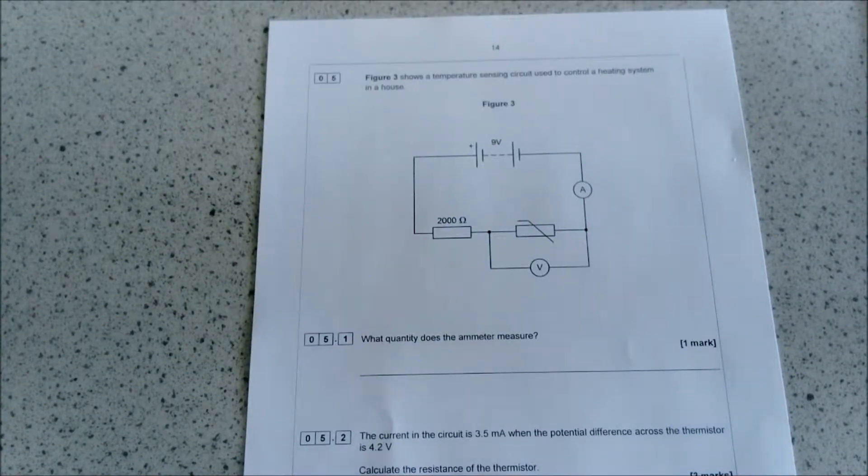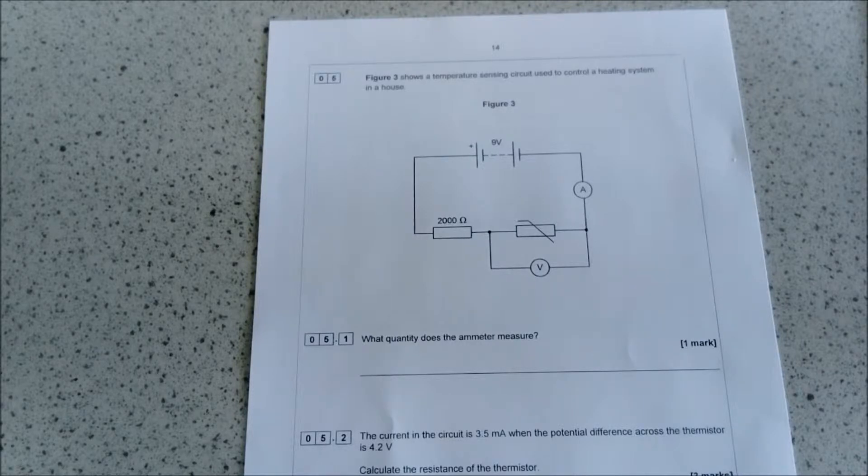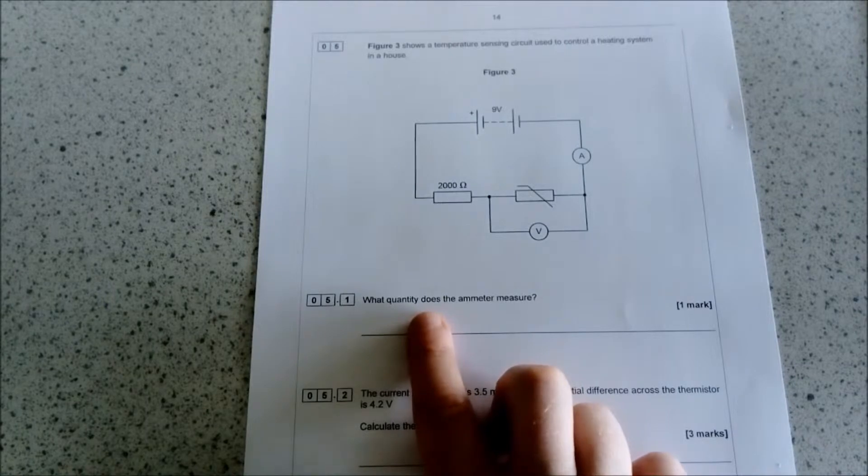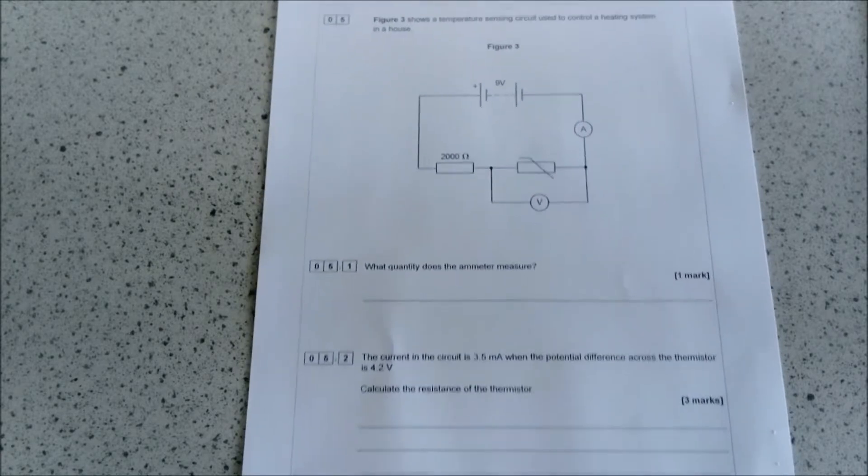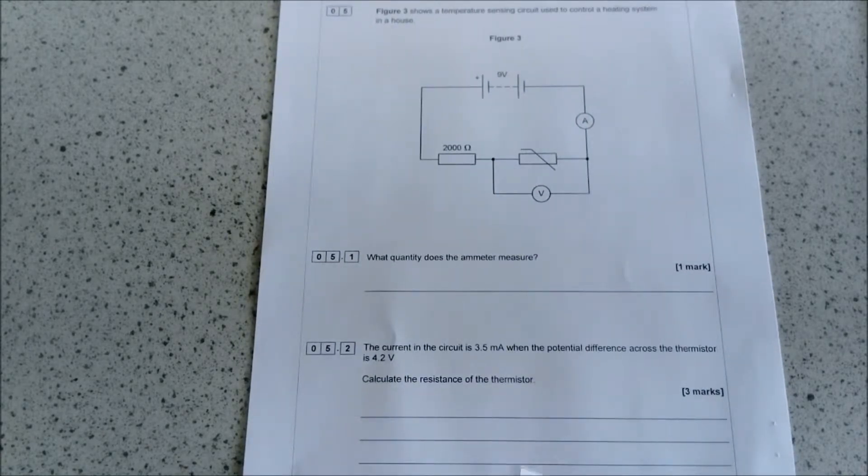So this question looks a little bit at circuit analysis and calculating resistance, and it's got a little bit on charging too. It starts off with Figure 3 shows how temperature sensing in the circuit is used to control a heating system. What quantity does an ammeter measure? Just remember that the ammeter always measures the current, and current is measured in amps.